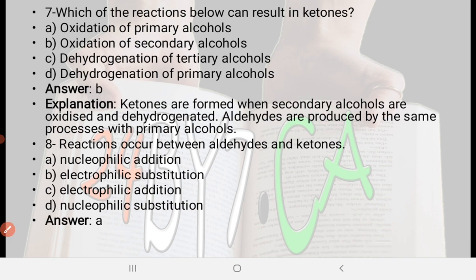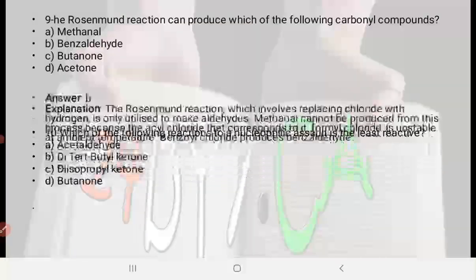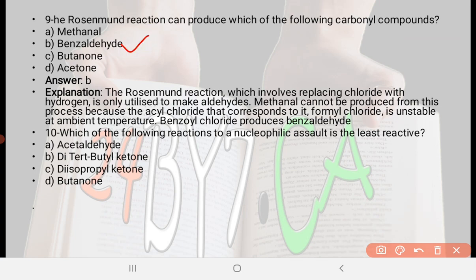Next: The Rosenmund reaction can produce which of the following carbonyl compounds? Option A: methanol, option B: benzaldehyde, option C: butanone, option D: acetone. The right answer is option B, benzaldehyde. The Rosenmund reaction, which involves replacing chloride with hydrogen, is only used to make aldehydes. Methanol cannot be produced from this process because the corresponding acyl chloride — formyl chloride — is unstable at ambient temperature. Benzal chloride produces benzaldehyde.